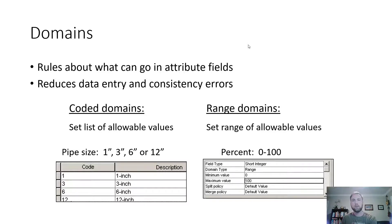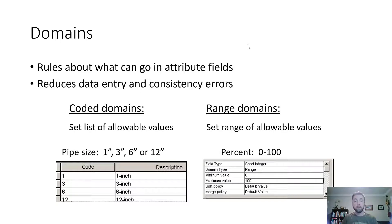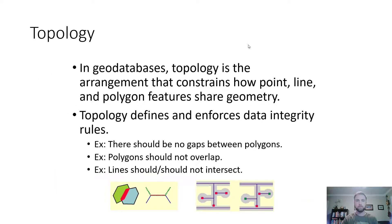Domains are rules about what can go into attribute fields — they help reduce data entry and consistency errors. The goal is to limit the potential values you can put into an attribute field. Coded domains only allow you to choose from a predetermined set of values. For example, pipe diameter: one inch, three inch, six inch, or twelve inch — you can't accidentally enter 13 inches. Range domains set a minimum-to-maximum value — say zero to 100, so you couldn't enter 101 or negative one.